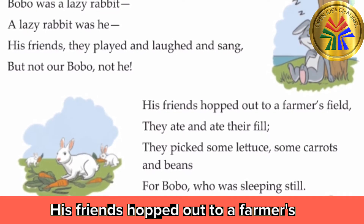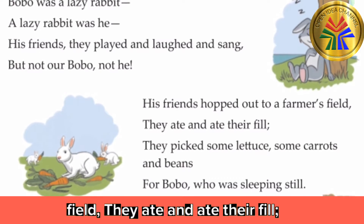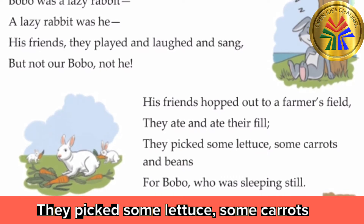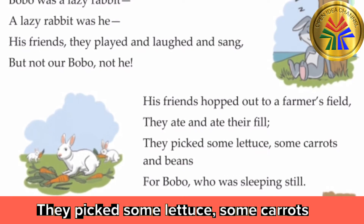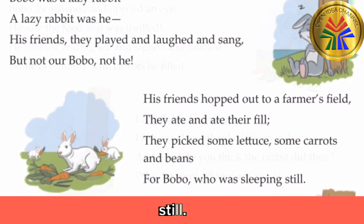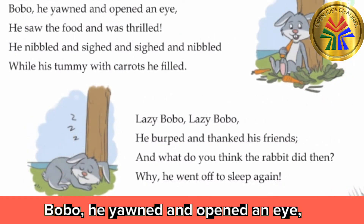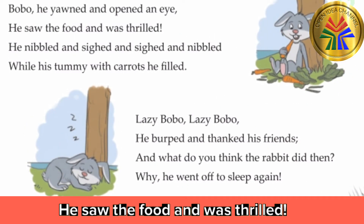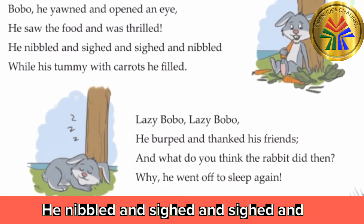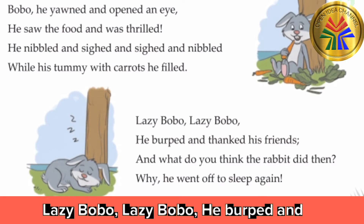His friends hopped out to a farmer's field, they ate and ate their fill. They picked some lettuce, some carrots and beans for Bobo who was sleeping still. Bobo yawned and opened an eye, he saw the food and was thrilled. He nibbled and sighed and sighed and nibbled while his tummy with carrots he filled.